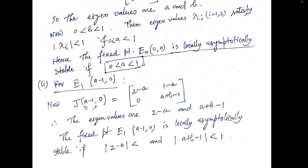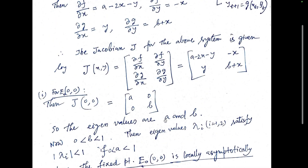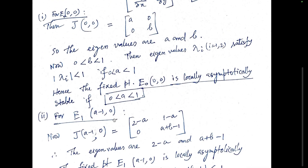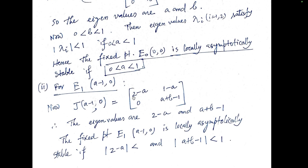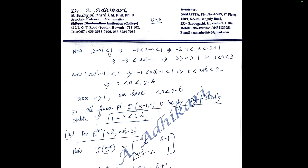For equilibrium point E₁ = (a-1, 0), we substitute x = a-1 and y = 0 into the Jacobian matrix, obtaining J at E₁ = [[2-a, 1-a],[0, a+b-1]]. This is an upper triangular matrix, so the eigenvalues are the principal diagonal elements: 2-a and a+b-1. E₁ is locally asymptotically stable if |2-a| < 1 and |a+b-1| < 1.